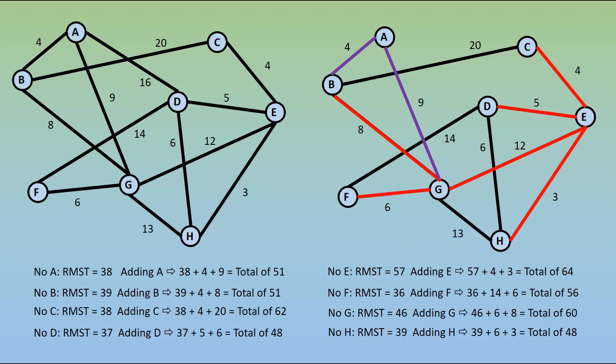We then look for the total that is largest. Remember we're looking for a lower bound, and what the algorithm is telling us is that each of these values we know that we can't beat. So for example, with node A, we know that we can't beat 51. But looking at C, we know that we also can't beat 62. So it makes sense to take the highest value.